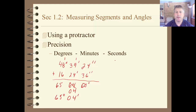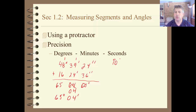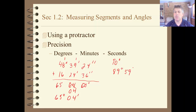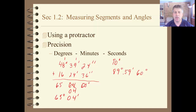Doing subtraction, we'll probably get a little tricky every once in a while, and we might subtract something from 90 degrees. It might be easier to use 89 degrees, 59 minutes, and 60 seconds — that's the equivalent of 90 degrees — and that might make your adding and subtracting minutes and degrees and seconds a little bit easier.